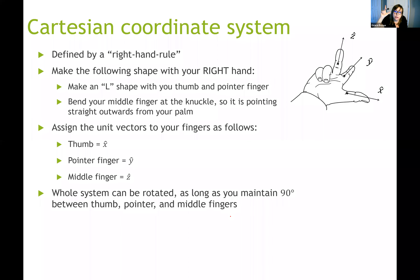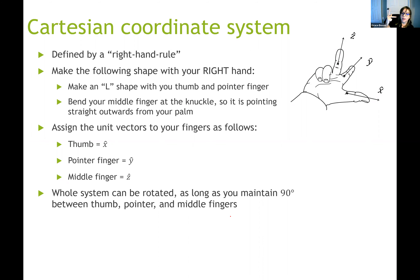Notice there is a perpendicular angle between your pointer finger and your thumb, between your pointer finger and your middle finger, and between your middle finger and your thumb. These three directions represent your three unit vectors x-hat, y-hat, and z-hat. Make these assignments: your thumb is x-hat, your pointer finger is y-hat, and your middle finger is z-hat. Memorize that shape.